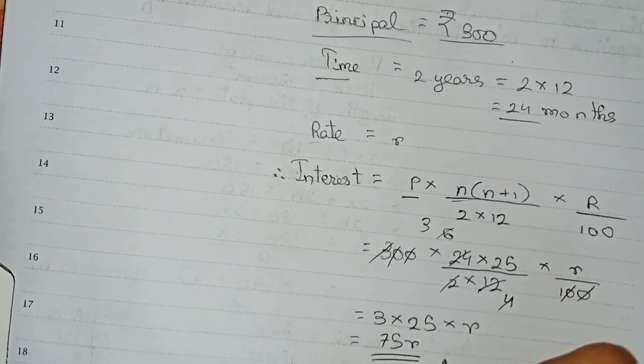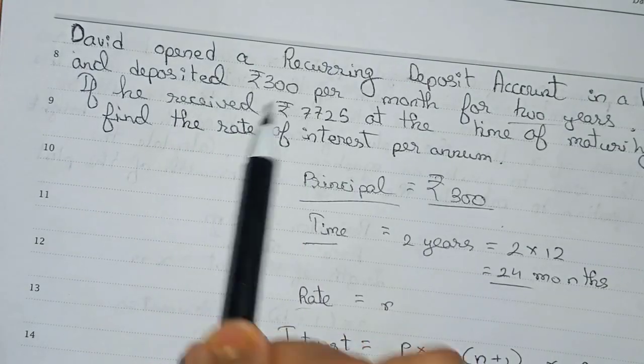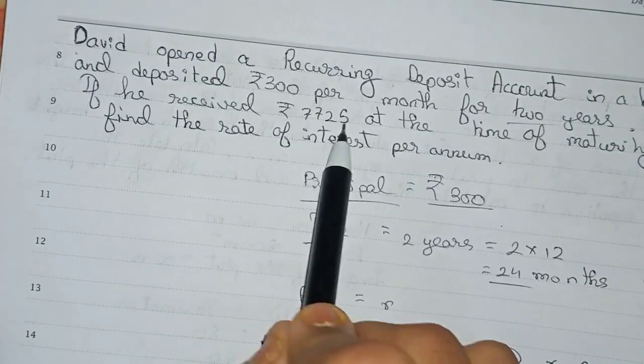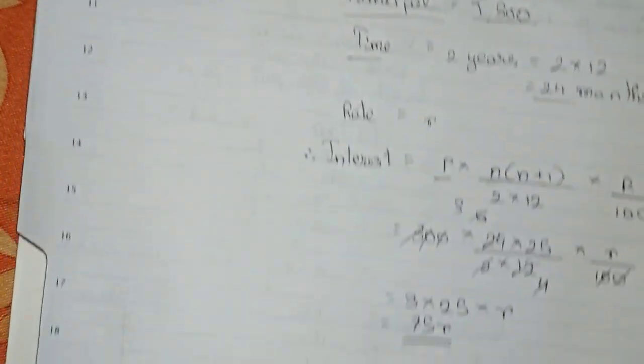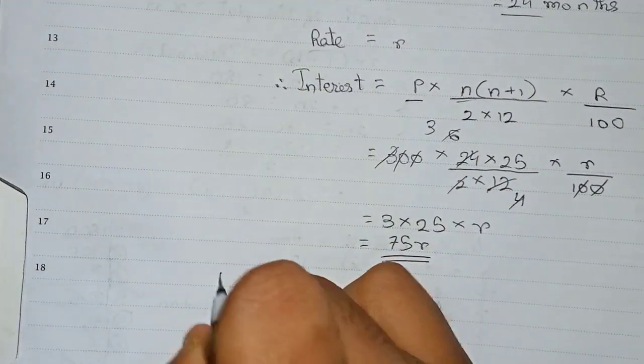So now 2 cancels here, 3 cancels. So 3 into 25 into r. 3 into 25 means 75r. So we got our interest. Now in the question it is mentioned that we received rupees 7725 at the time of maturity.